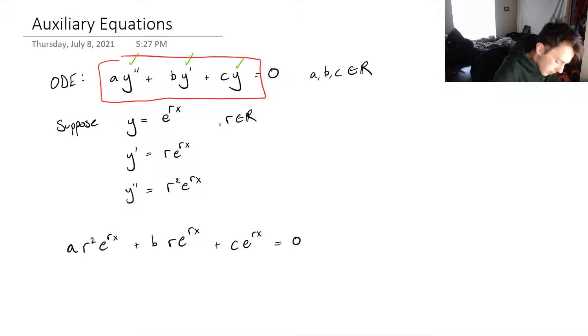So we can now just factor this out, make it a little neater. So we'll factor out e to the rx, and we're left with a times r squared plus b times r plus c, and this is equaling zero.